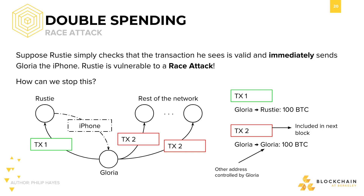Suppose Rusty is very naive and trusting. The moment he sees a valid transaction from me, he sends me the iPhone. This is before the transaction even enters a block. He makes the assumption that if the transaction is floating around the network, it will eventually make its way into a block and he will get paid. I can take advantage of that.